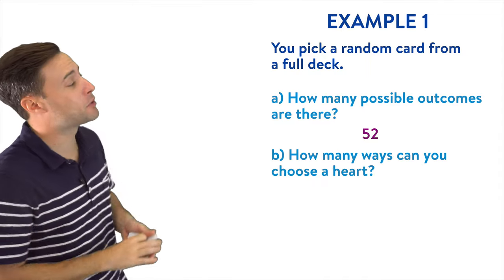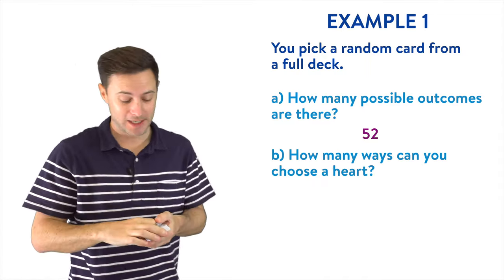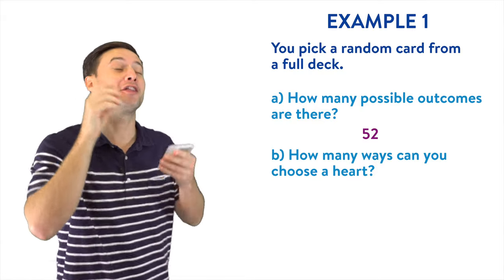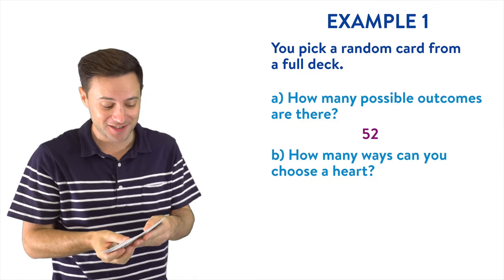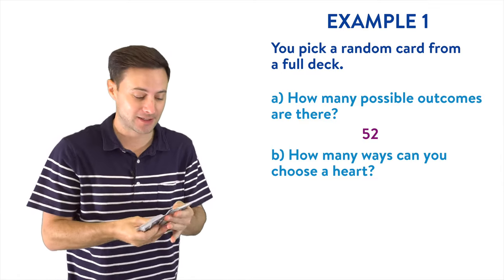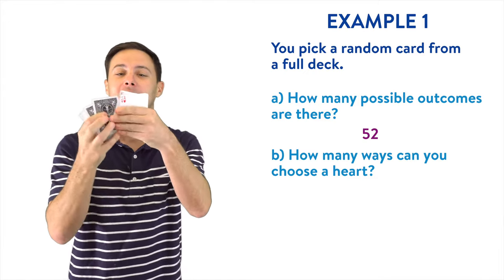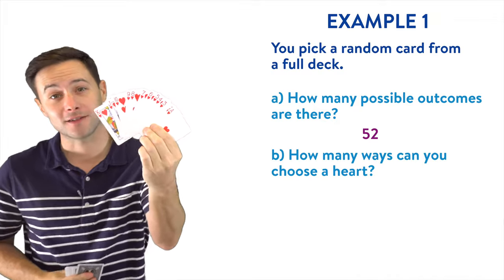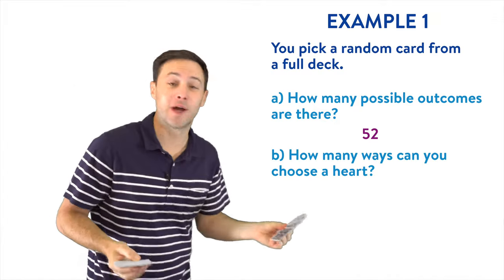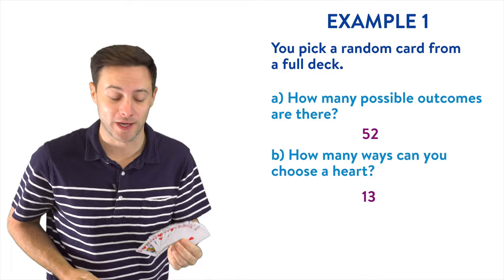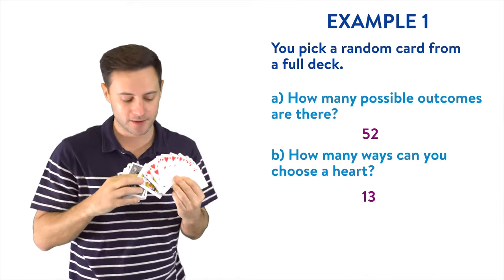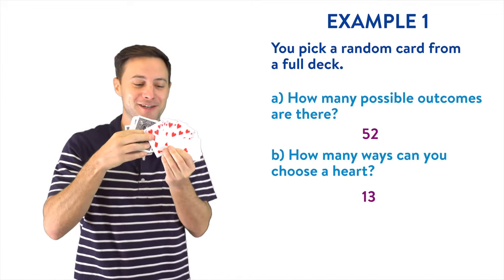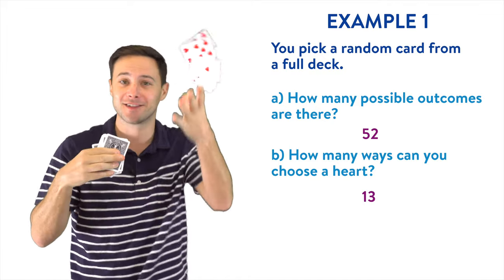Alright, question B: how many possible ways can you choose a heart? Well, if you remember, heart is one of the four suits. And there are 13 hearts, or 13 of every suit in a deck. So if we look, every single one of these would be a way to choose a heart, right? So how many ways? There are 13 different ways. We could choose the king of hearts, we could choose the queen of hearts, we could choose the jack of hearts, the 10 of hearts, the nine of hearts, or any other one.